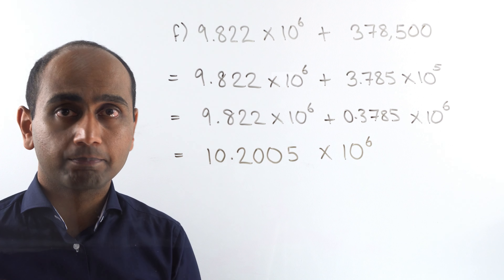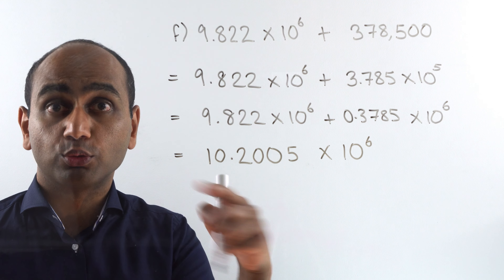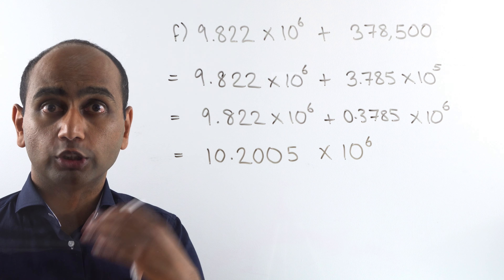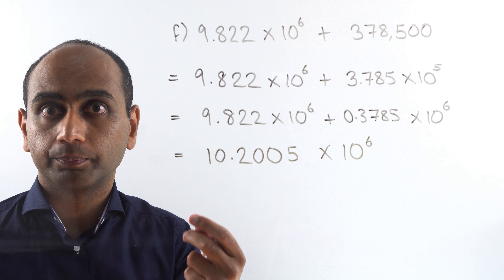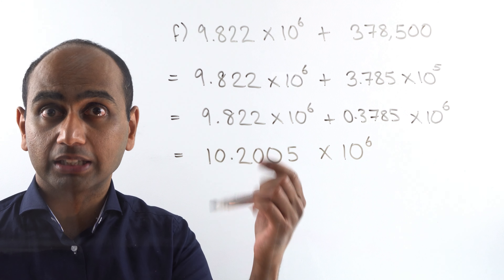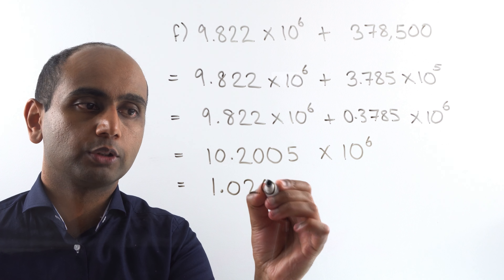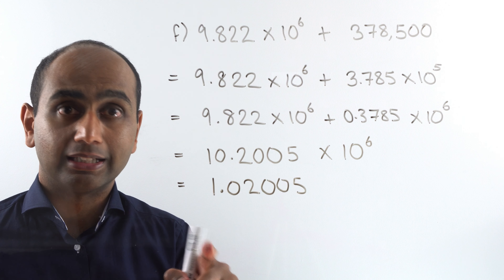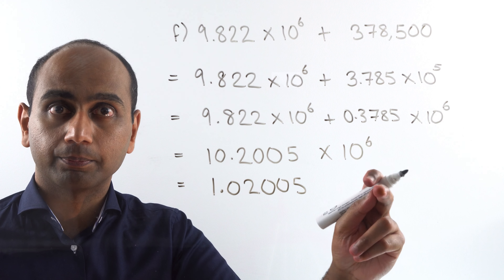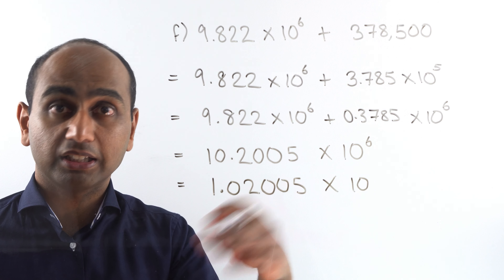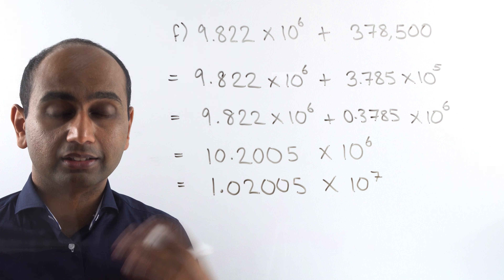Can I leave it there? No — this is not in standard form, because 10.2005 is greater than 10. For a number to be in standard form, the coefficient must be at least 1 and less than 10. So I divide 10.2005 by 10 to get 1.02005, and to compensate I multiply 10 to the power of 6 by 10 to get 10 to the power of 7. So the final answer is 1.02005 times 10 to the power of 7, which is in standard form.